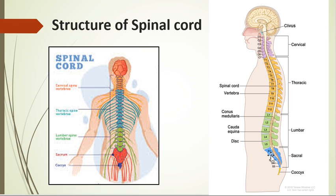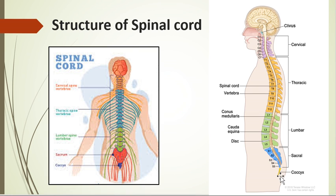The vertebral column has segments: cervical, thoracic, lumbar, sacral, and coccyx. The same division is given to the spinal cord. Pairs of spinal nerves emerge outside, named accordingly: C1 to C7 cervical spinal nerves, 12 thoracic, 5 lumbar, 5 sacral, and 1 coccyx — totaling 31 spinal nerve pairs in our body.